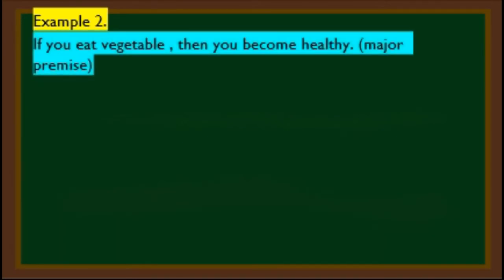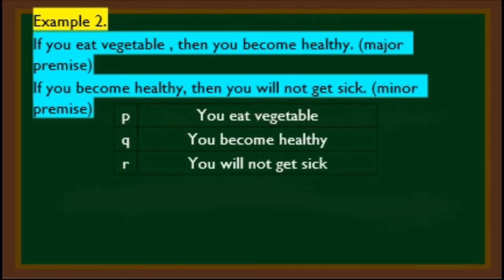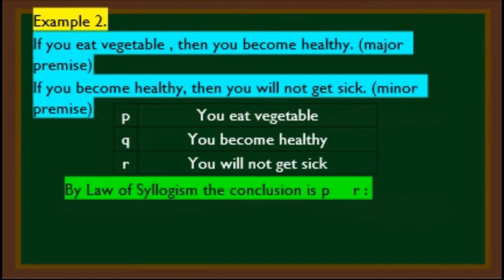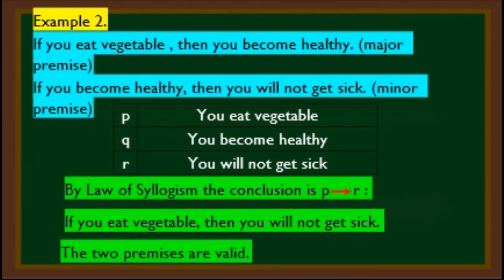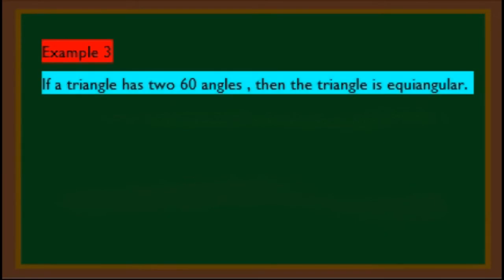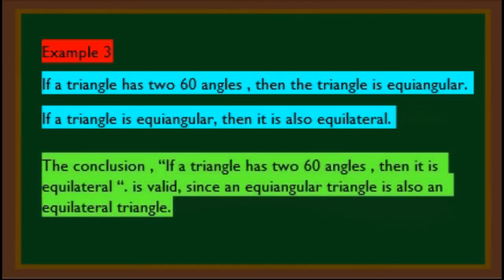Example 2: if you eat vegetables, then you become healthy (major premise). If you become healthy, then you will not get sick (minor premise). P: you eat vegetables; Q: you become healthy; R: you will not get sick. By the law of syllogism, P implies R: if you eat vegetables, then you will not get sick. The two premises are valid. Example 3: if a triangle has three 60-degree angles, then the triangle is equiangular. If a triangle is equiangular, then it is also equilateral. Conclusion: if a triangle has three 60-degree angles, then it is equilateral — valid since an equiangular triangle is also an equilateral triangle.